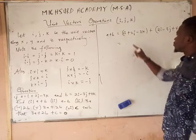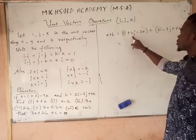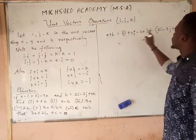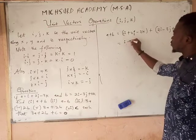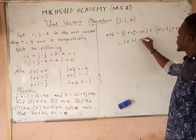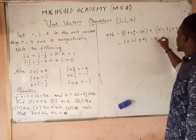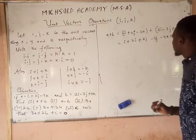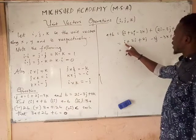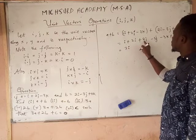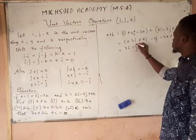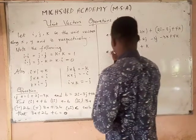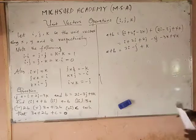So this should be equal to — we are going to add up these unit vectors with their corresponding like terms. i will add up with 2i, so we have i plus 2i. Then we have 2j minus 3j. Then the next one we have there is minus 3k plus 4k. So we have that i plus 2i gives us 3i, then 2j minus 3j gives us minus j, then minus 3k plus 4k gives us positive k. So that is our answer for a plus b, which is 3i minus j plus k.